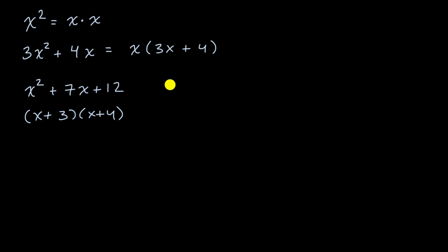We also looked at things like differences of squares. x² - 9. Say, hey, that's x² - 3². So we could factor that as (x + 3) times (x - 3).